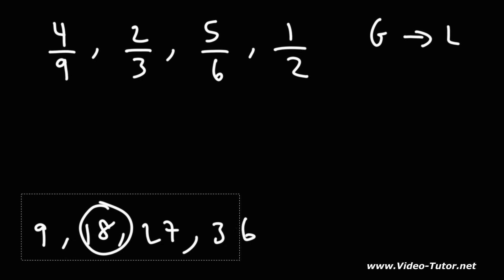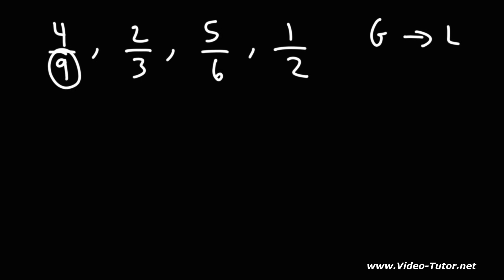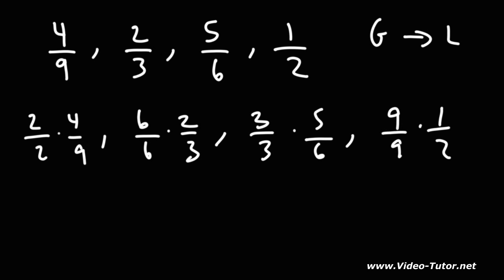Now 18 divided by 9 is 2, so I'm going to multiply the first fraction by 2 over 2. 18 divided by 3 is 6, so I'm going to multiply the second fraction by 6 over 6. 18 divided by 6 is 3, so I'm going to multiply the third fraction by 3 over 3. 18 divided by 2 is 9, so I'm going to multiply the last fraction by 9 over 9. This will give me a common denominator of 18.